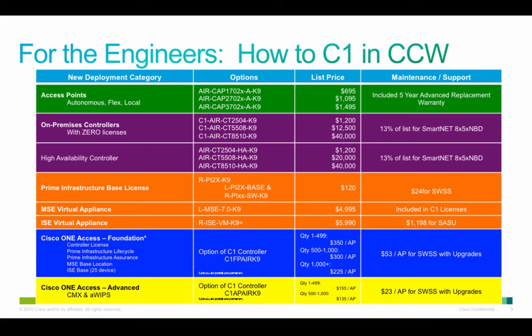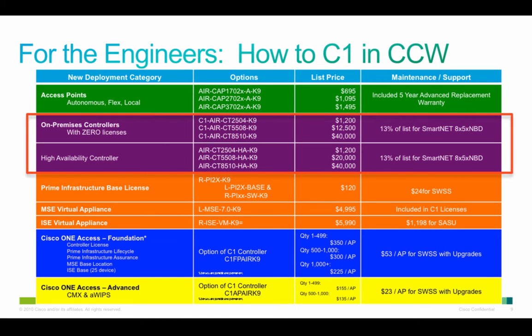Now I know this is a little bit of an eye chart, but this helps walk you through putting an order together in Cisco Commerce Workspace at cisco.com/go/ccw. First off, we start with the access point — you pick the access point that makes the most sense for your deployment. And then you pick the controller that makes the most sense for your deployment.